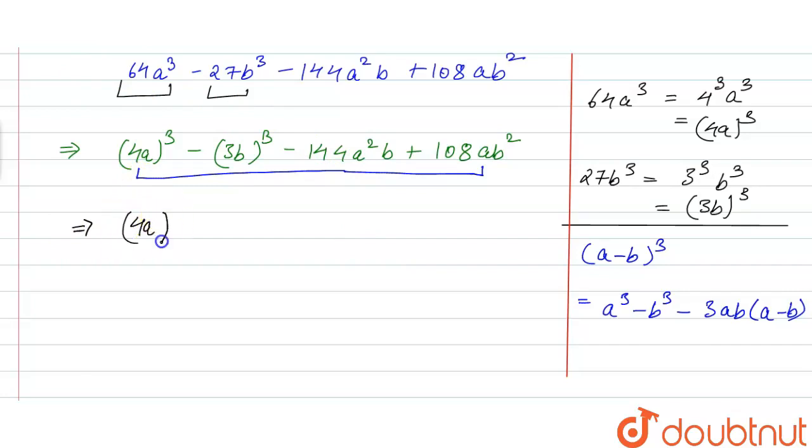Minus (3b)³, this will be b³. And now we will create this -3ab(a-b). So we have taking -36ab common.